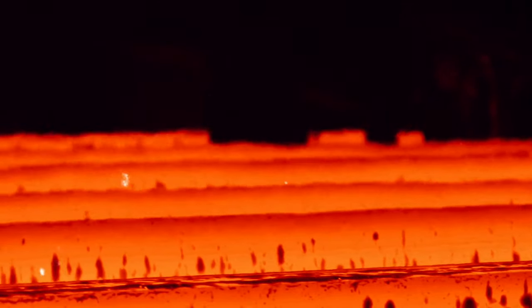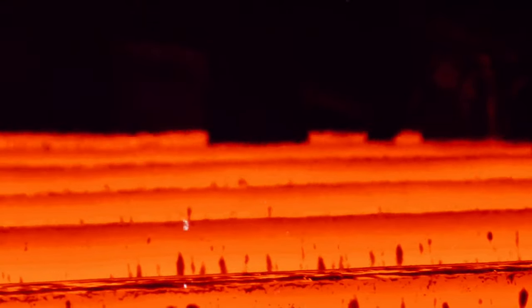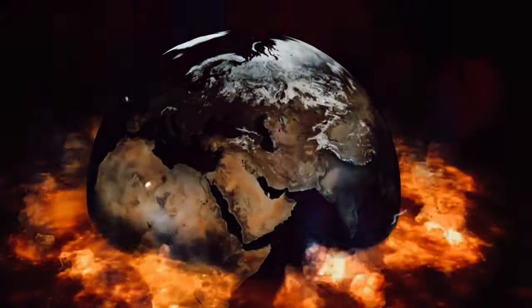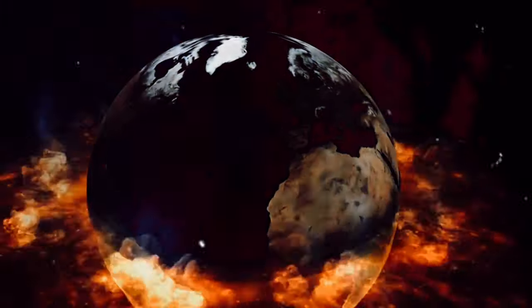It's primarily composed of iron and nickel, and with a radius of about 760 miles, it's slightly larger than the planet Mars. Then we have the outer core. Contrary to the inner core, the outer core is in a liquid state.